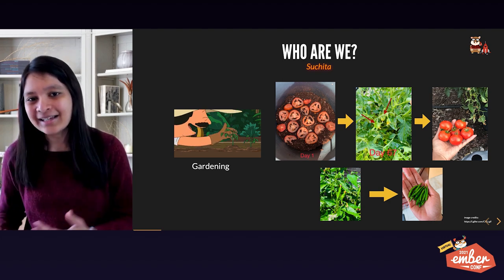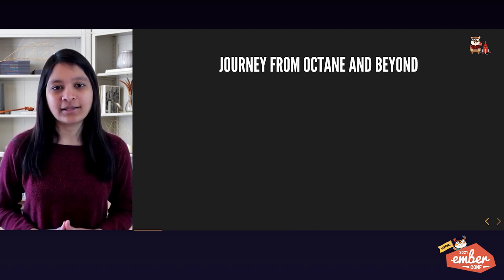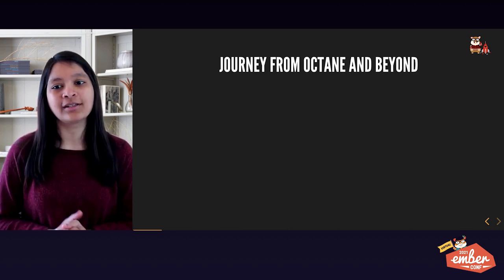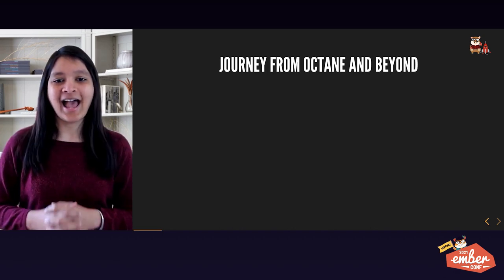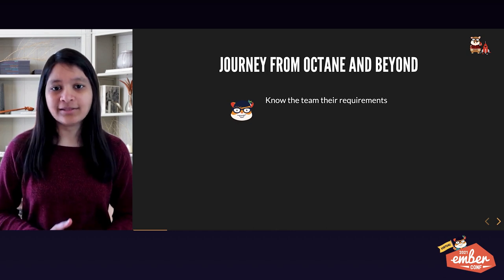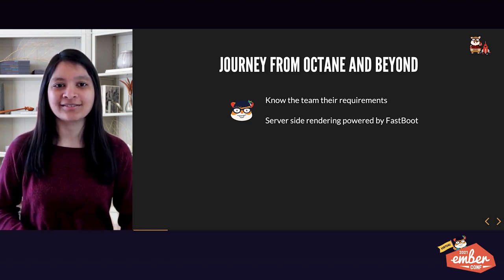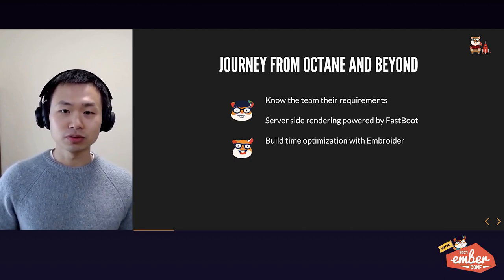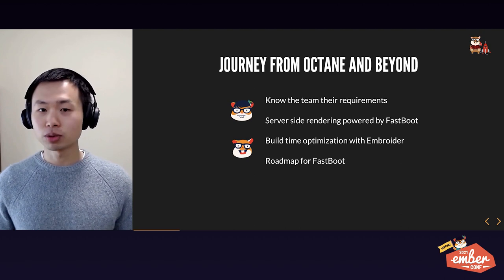Now let's get back to our main topic: fast tracking Ember with Fastboot and Embroider. Last year I presented the journey of Ember from 1.x to Octane, where we saw the paradigm shift that Octane introduced. This year we'll take you through a story of a team that migrated to Octane and is now looking to further improve their app. We'll first get to know the team and their requirements, then understand how Fastboot powers the server-side rendering experience, then talk about how we can optimize at build time with Embroider, and finally what's on the roadmap for Fastboot and Ember.